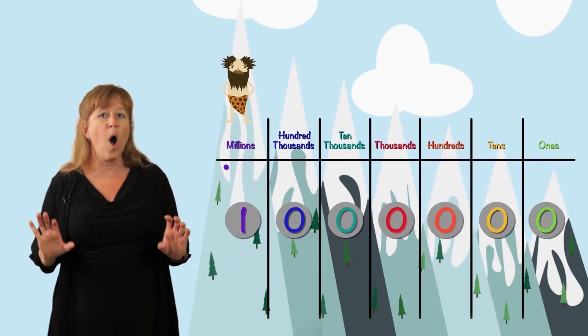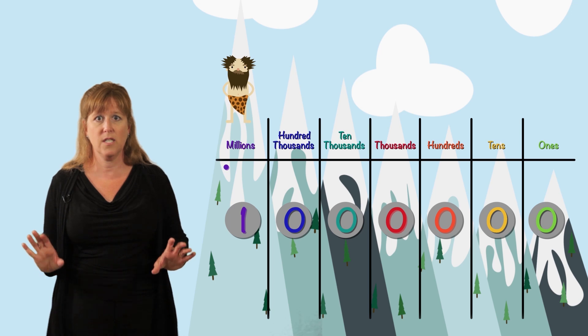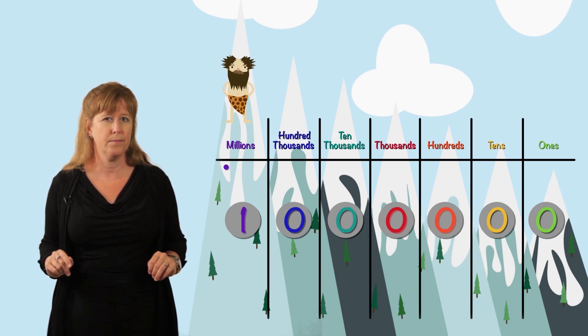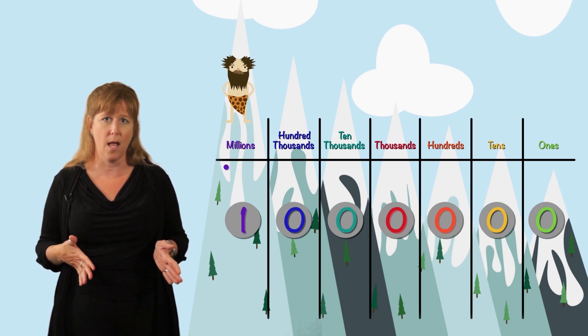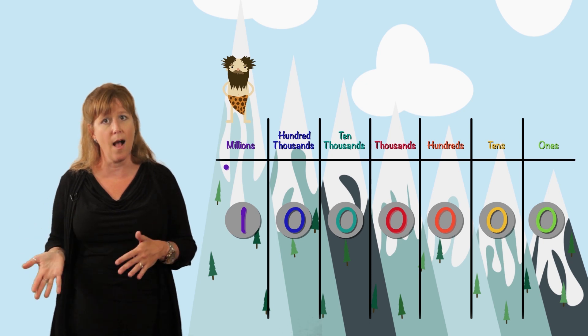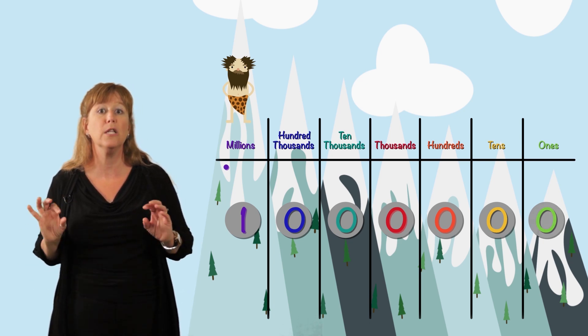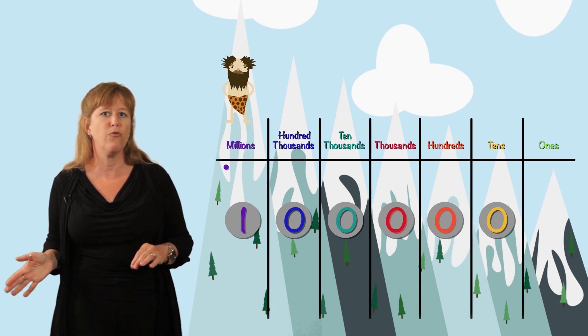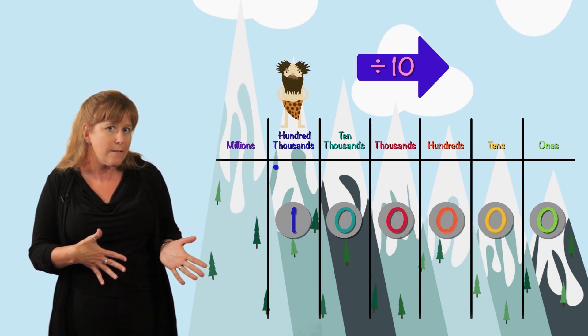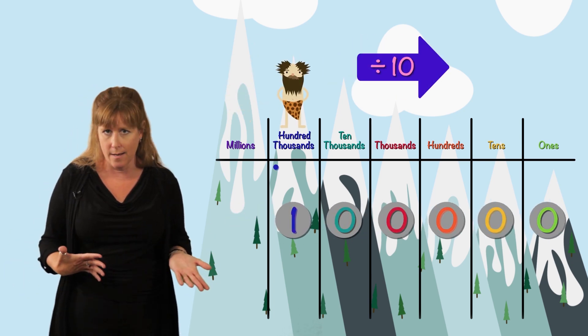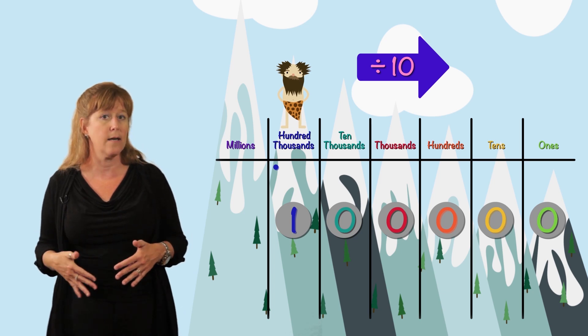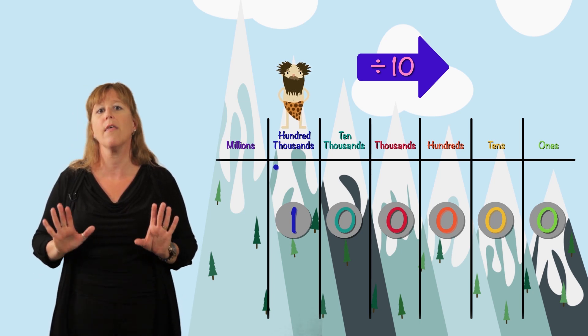So what is one million divided by ten? We know in multiplying we moved one column and added a zero. So now we lose a zero and move one column to the right. One million divided by ten is one hundred thousand.